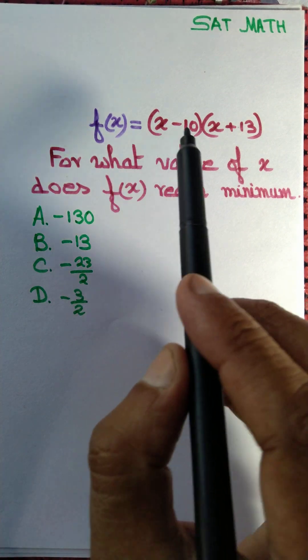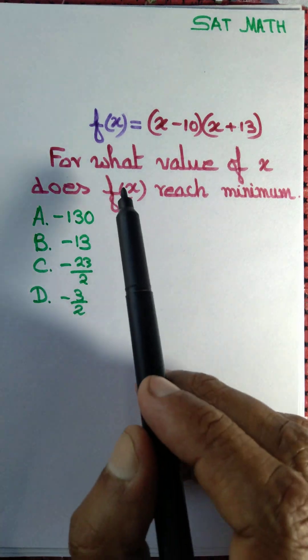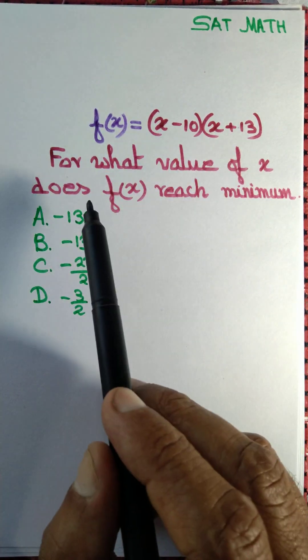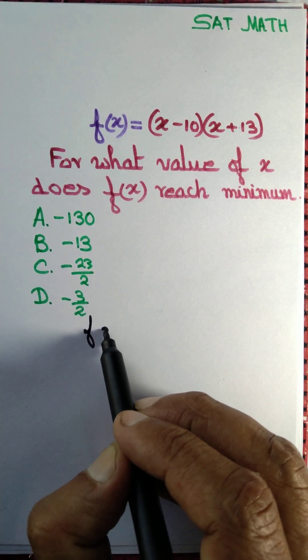We have the expression f(x) equals the product of (2x - 10) and (x + 13). The question is: for what value of x does f(x) reach minimum? Let's write f(x) once again: f(x) equals (x - 10)(x + 13).